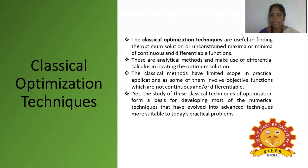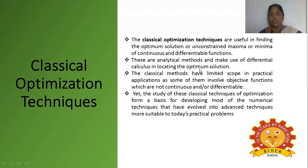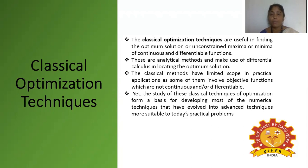The classical optimization technique finds the optimal solution at maximum concentration using continuous or variable functions. These are analytical methods that make use of differential calculus to locate the optimum solution — analyzing whether the substrate is qualitatively or quantitatively sufficient for product formation, and what the composition is.